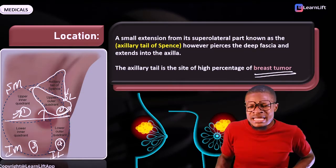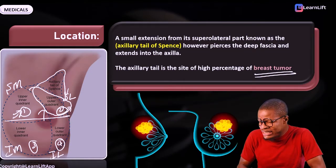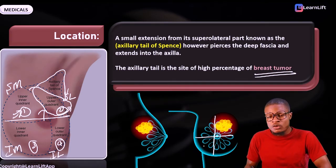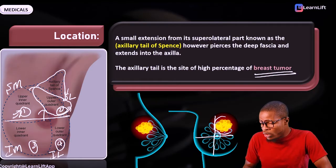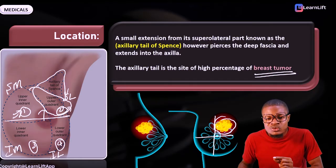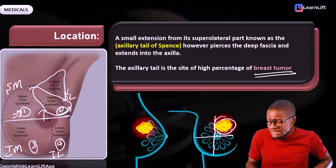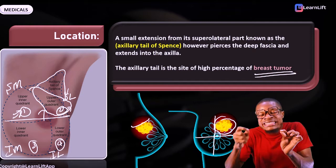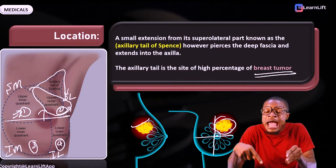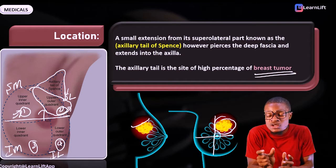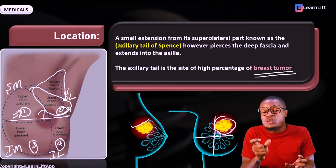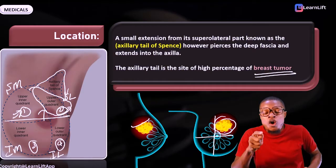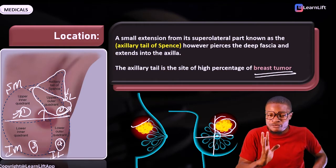The axillary tail of Spence extends from the superlateral part of the breast — the upper outer quadrant — into the axilla. You can see from the diagram that this is the site of breast cancer in the supralateral quadrant. The axillary tail of Spence is the site of the high percentage of breast cancer because it extends from the upper outer quadrant into the axilla.